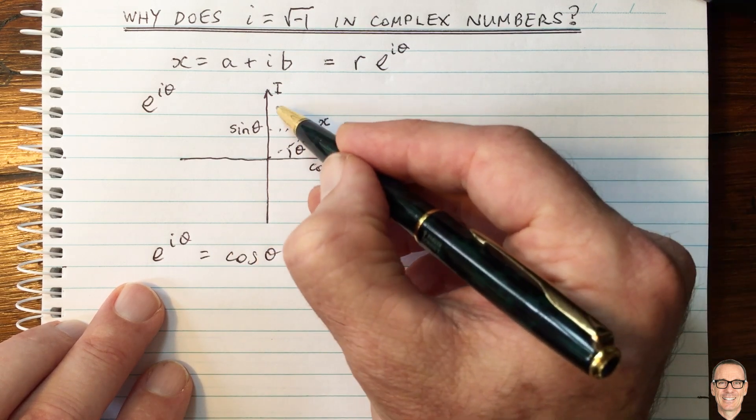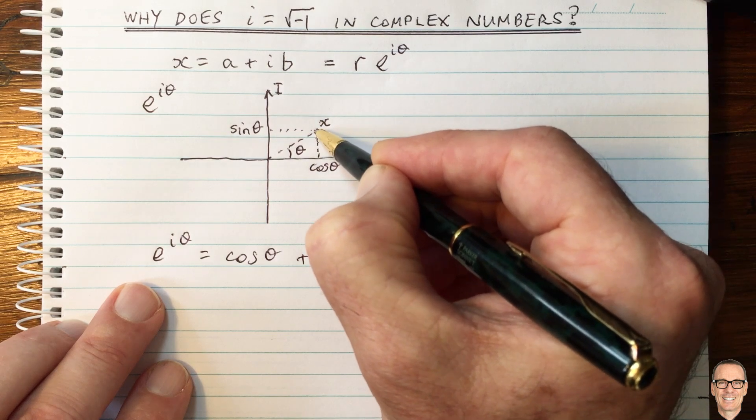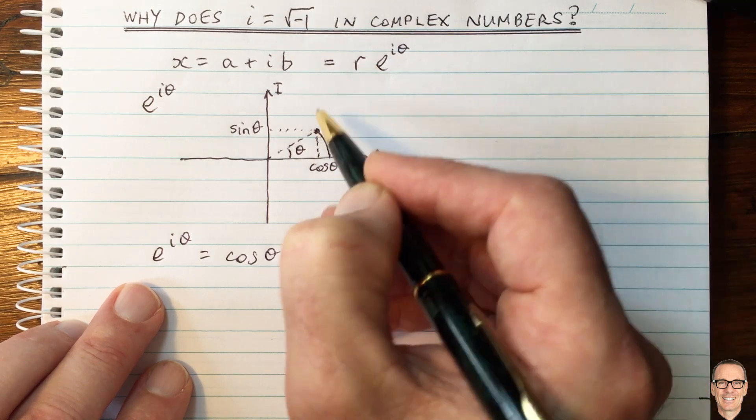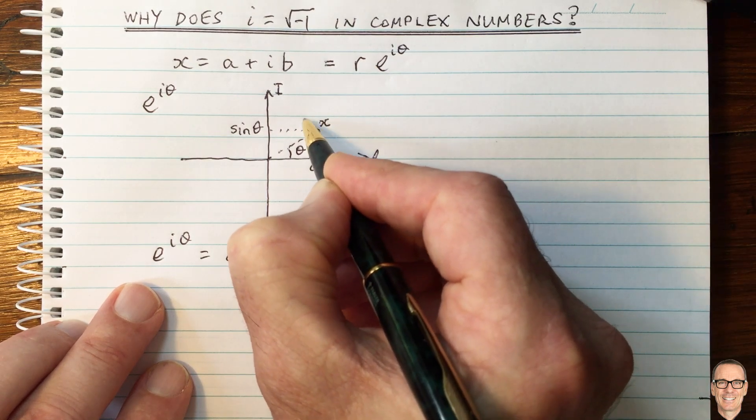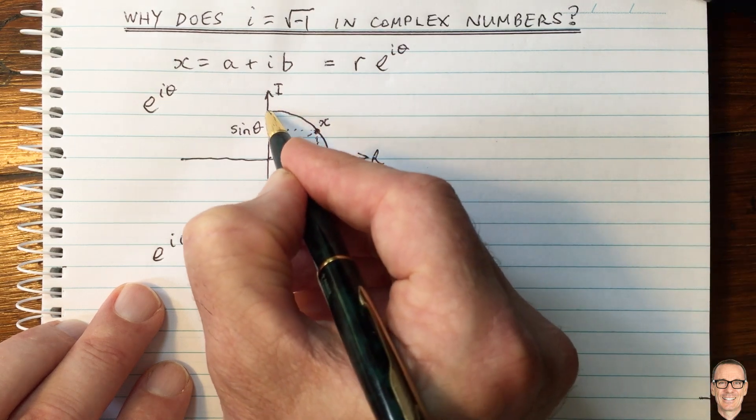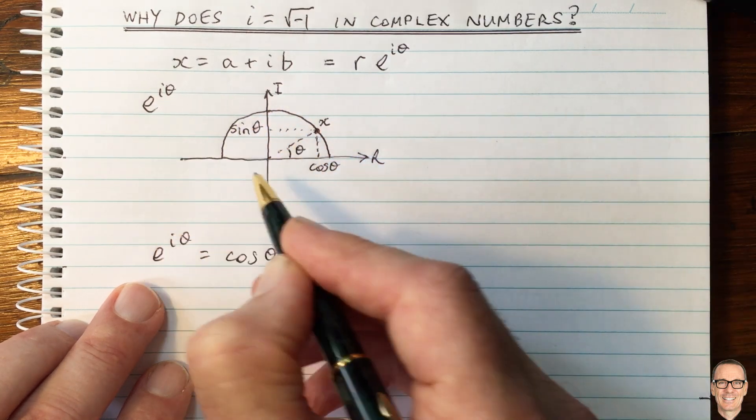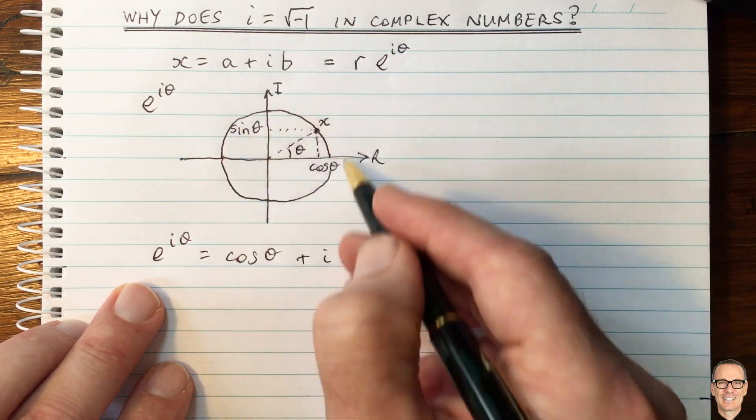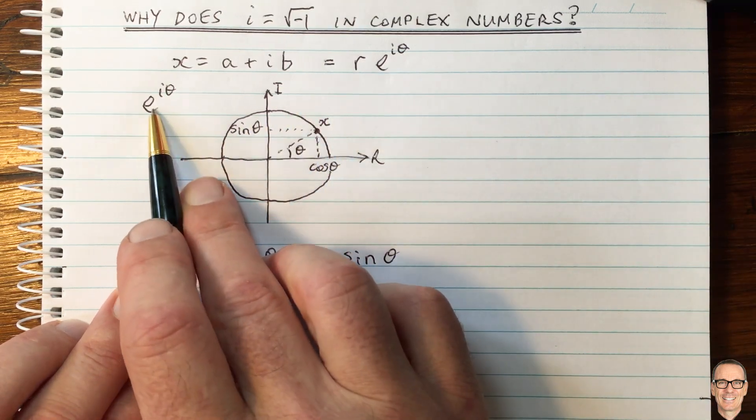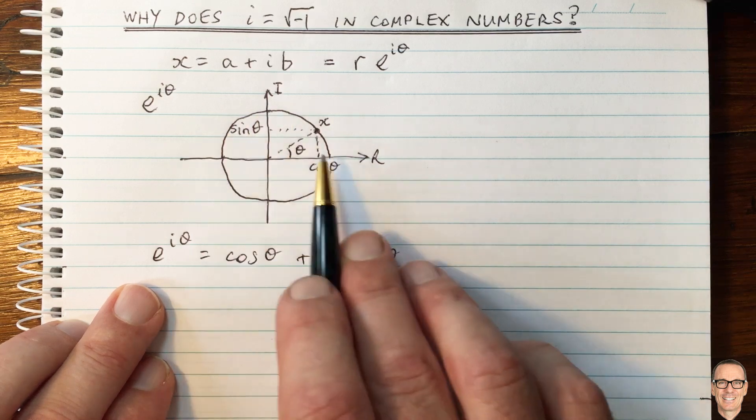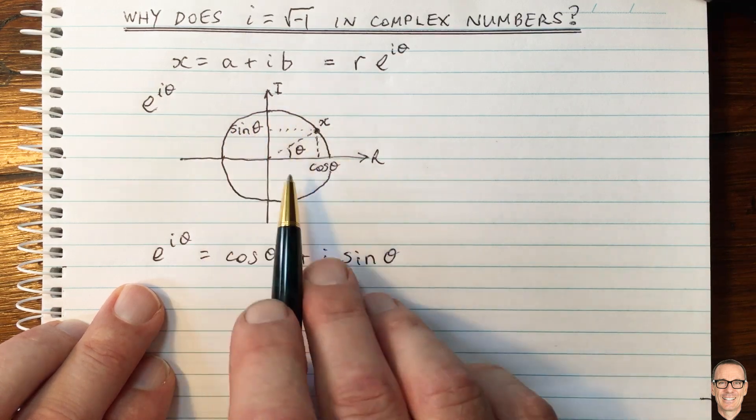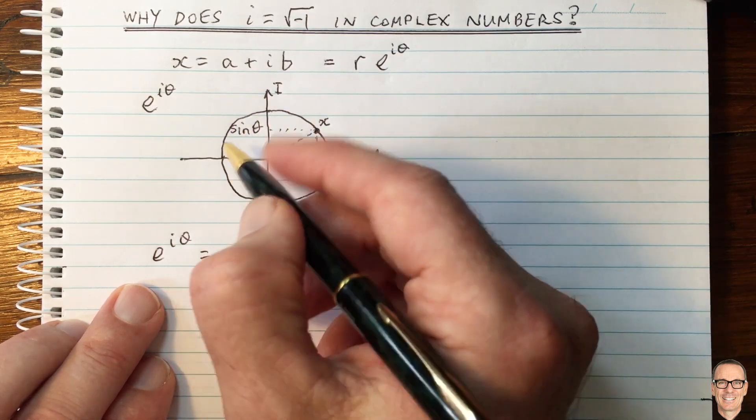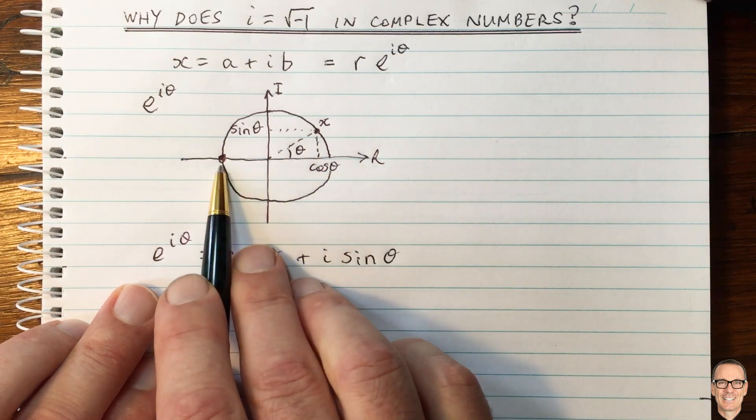So there's what we call the unit circle, because this value of r that we have equals 1. So I can draw a circle here. This is my best approximation to a circle freehand. This is the circle that the value e to the i theta lives on for all the different values of theta. So when theta equals pi, that's over here. That's this value over here.